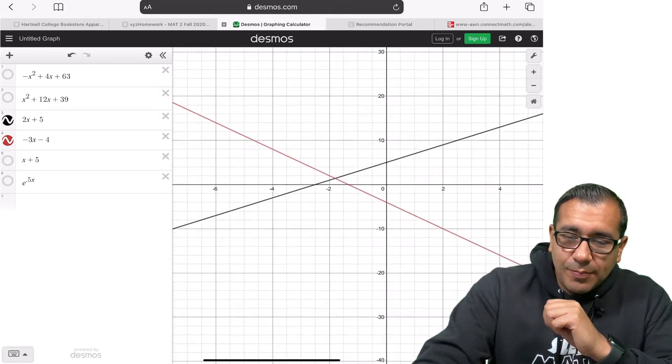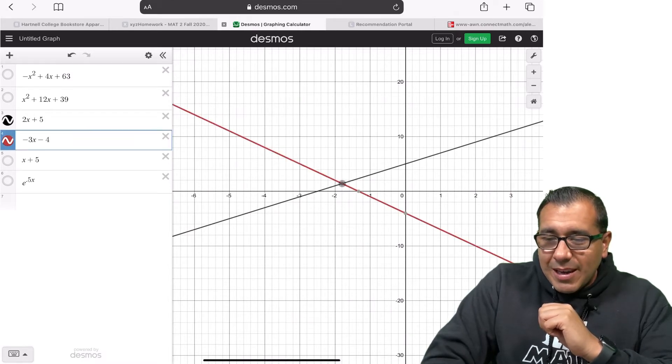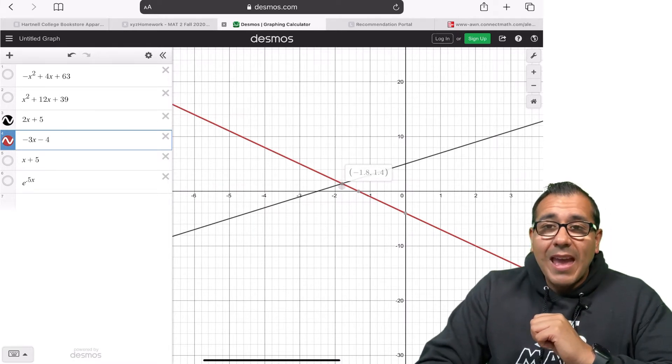So if I zoom in, I could just kind of take my best guess here. So I have my little cursor around that point where they intersect and I click it. And right there, it tells me that they intersect at the point negative 1.8 and 1.4.